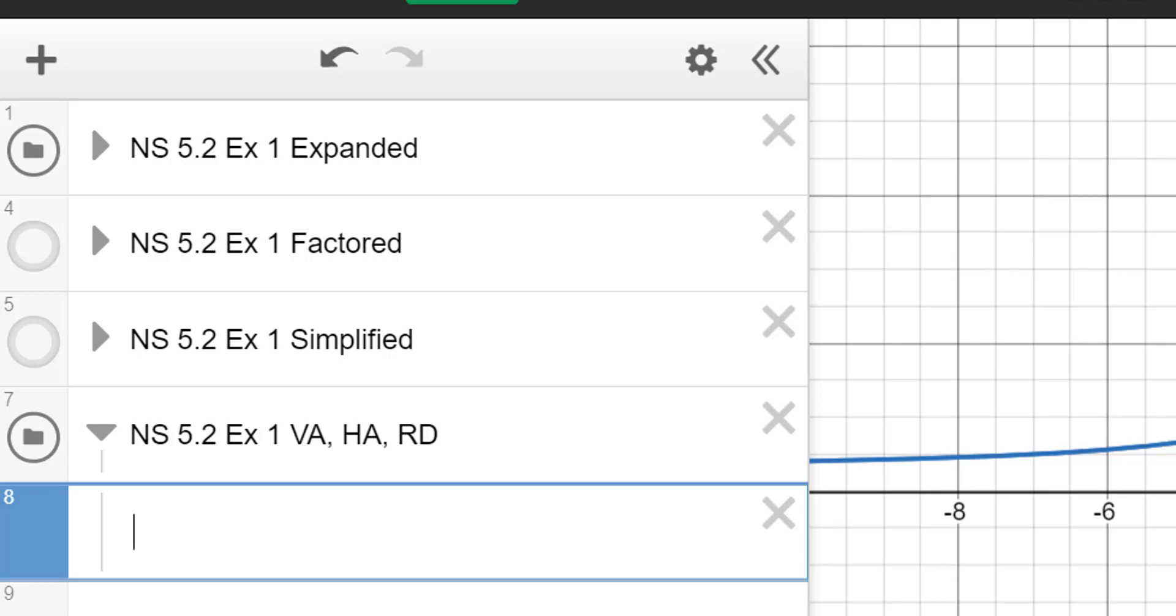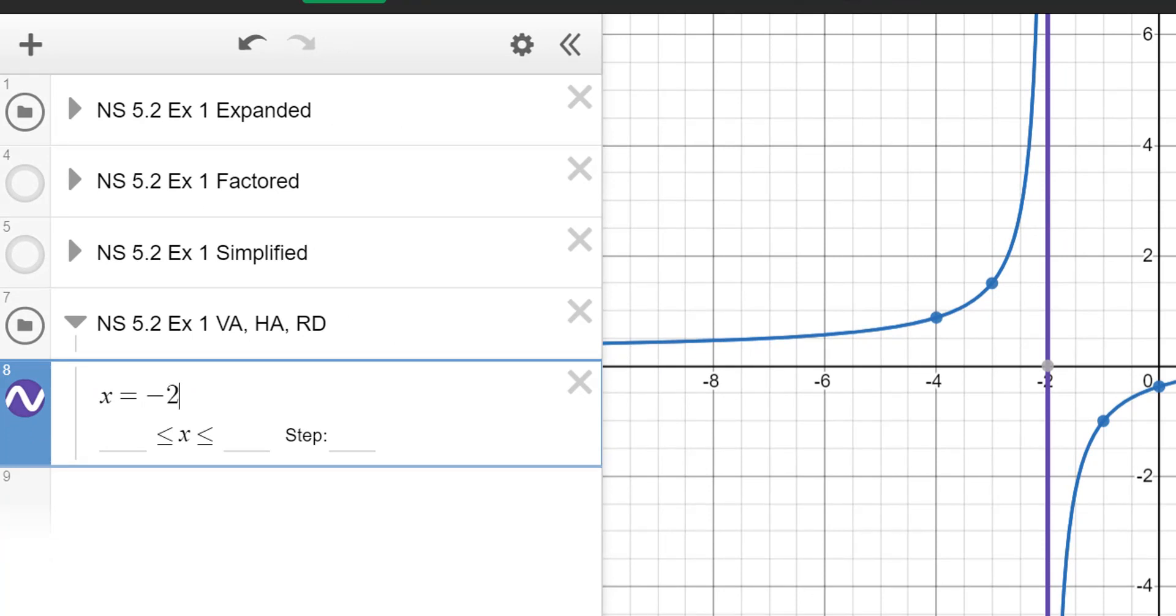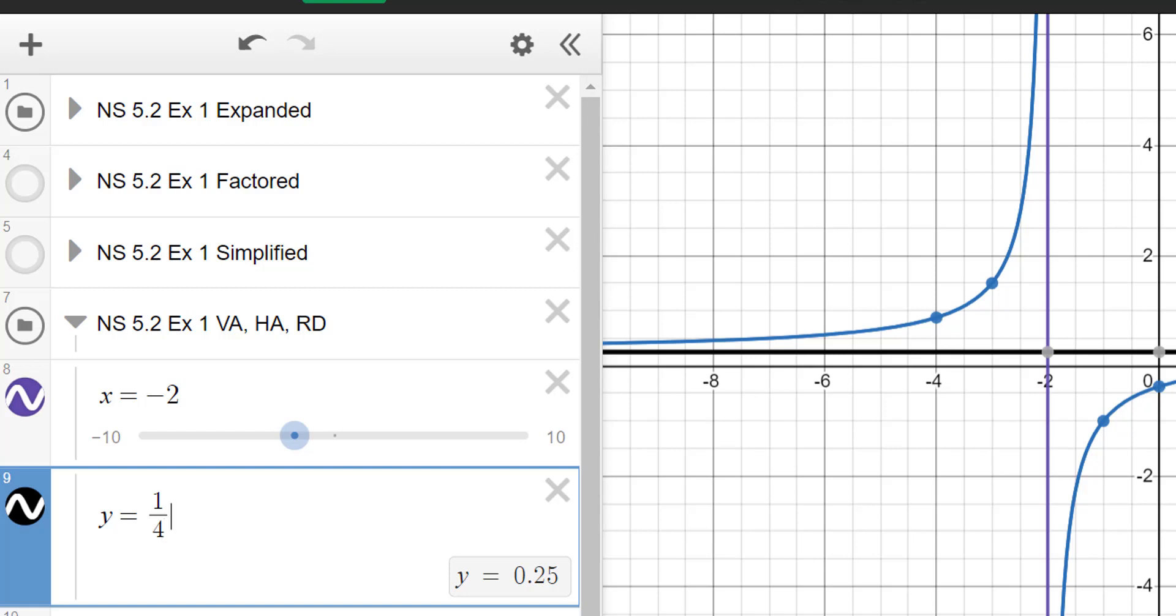So in this particular rational function that we have, we had a vertical asymptote at X equals negative two. And you can kind of see that from the graph. And we also had a Y value for our horizontal asymptote. So make sure you put Y equals. And that was a value of one-fourth. So those are our two distinct asymptotes.